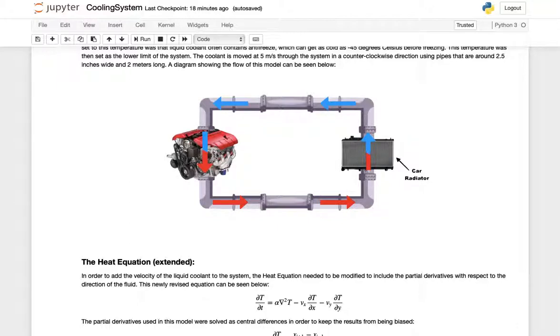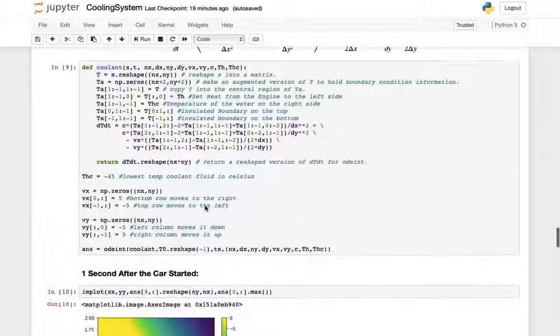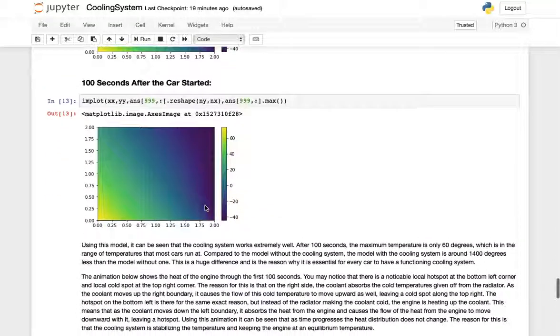We'd also expect the hottest spot of our car to be as soon as the coolant passes by the engine, so this didn't have any time to disperse the heat so our hottest spot would be right here. That's what we get when we look at our graphs right over here.